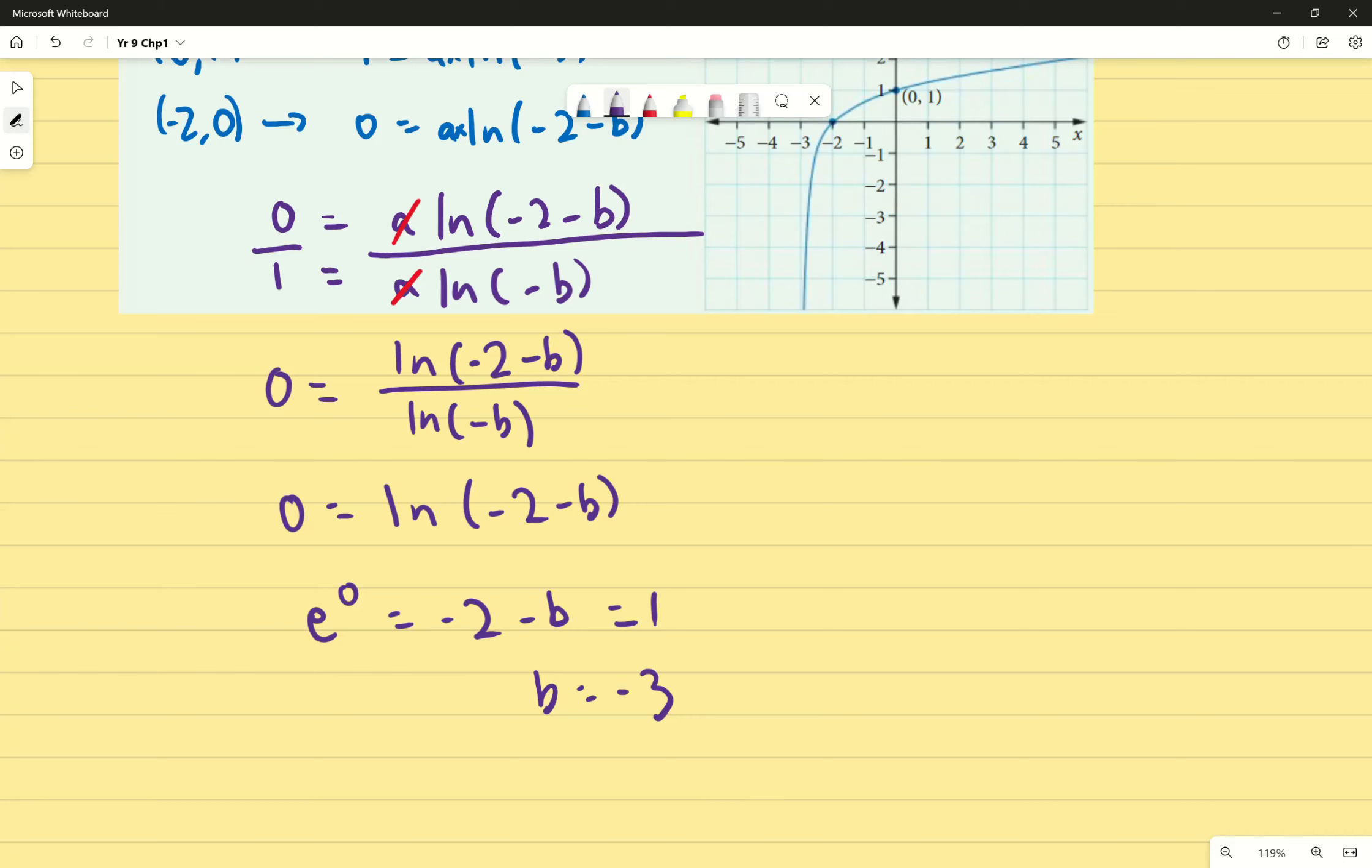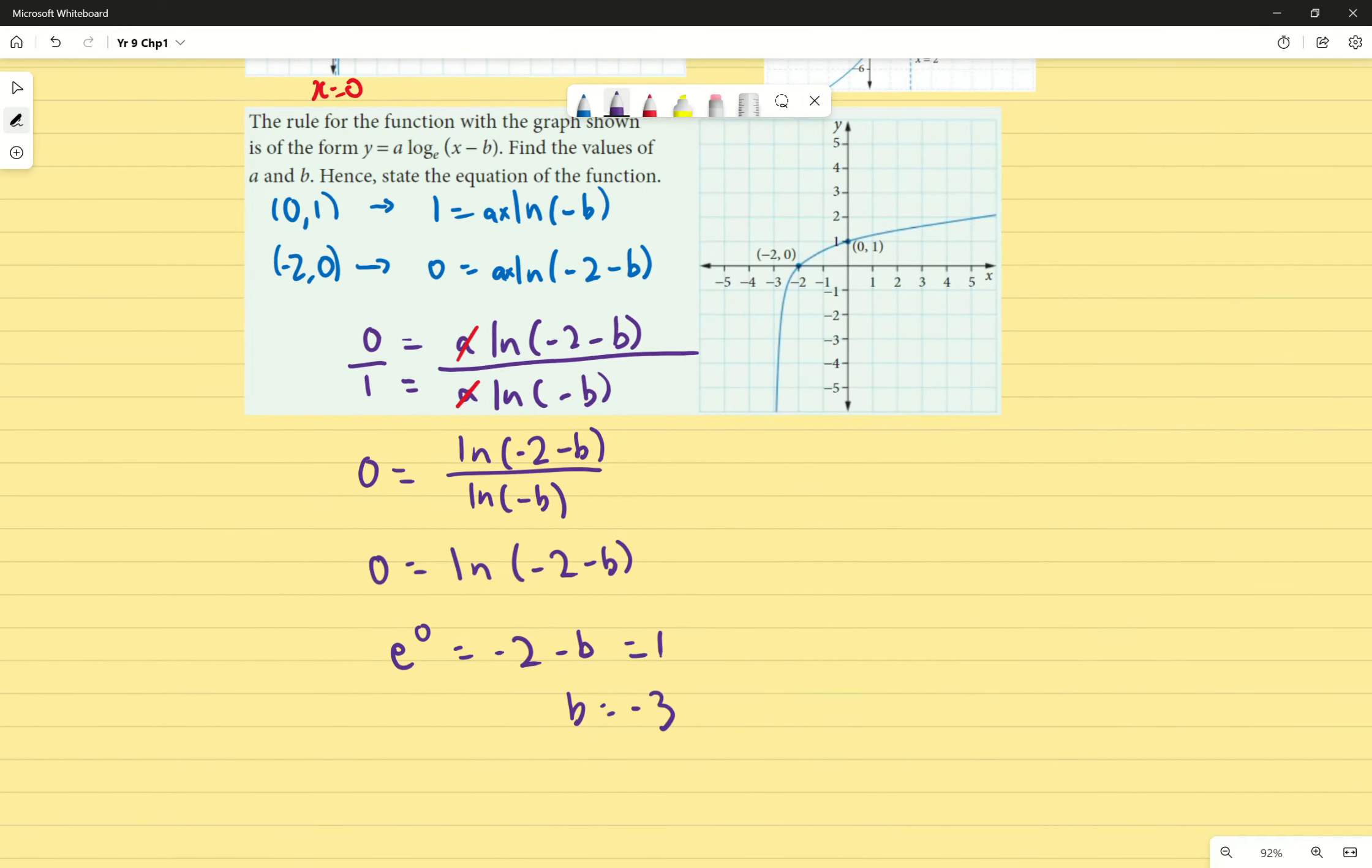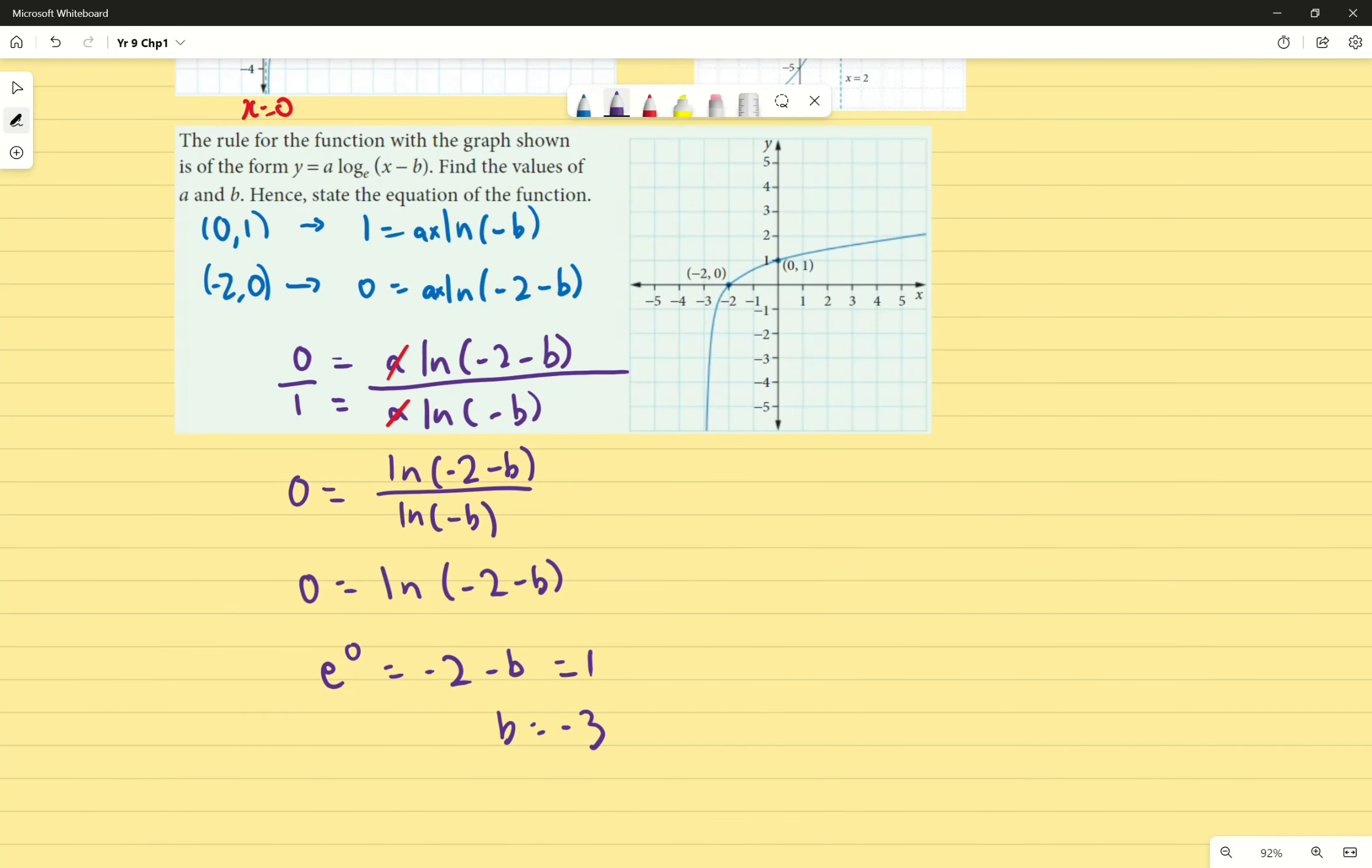Therefore, my asymptote is going to be at x equals negative 3. So x equals... here we go. That should be positive 3. Apologies. b equals positive 3. Wait one second, sorry. Negative 2 minus b. Add 2 on both sides. Negative b is correct. Apologies. It is going to be at x equals negative 3.